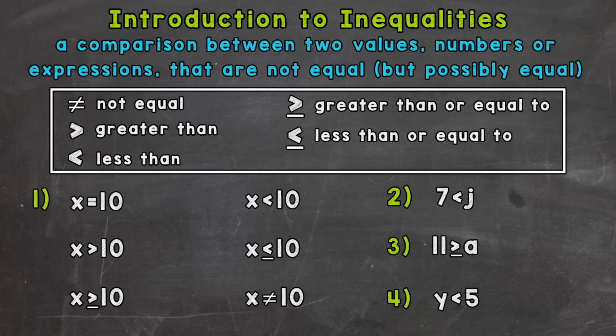So let's jump into number one, where we will take a look at what all these symbols actually mean. We'll start with x equals 10, which is not an inequality — it's an equation. So x equals 10 is an equation. There's only one solution for this equation: x has to equal 10.